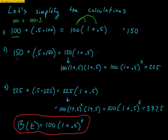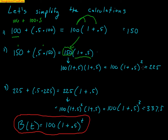In year two, I take 150 and add 50% of 150. Factoring out 150 gives 150 times (1 plus 0.5). But where did that 150 come from? It came from year one: 100 times (1 plus 0.5). So the year two total is 100 times (1 plus 0.5), times another (1 plus 0.5), which is 100 times (1 plus 0.5) squared, or 225.